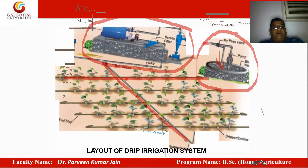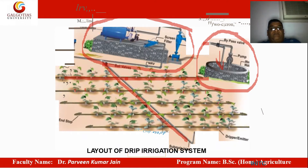On these laterals there are drippers. From these drippers, the water is delivered drop by drop to the root zone only. This is the way the system works.